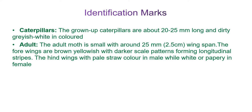The four wings are brown or yellowish in color with a darker scale pattern forming longitudinal stripes. The hind wings show a pale straw color in the male, whereas in the female the hind wings are either white or papery in color. This allows easy differentiation between the male and female moth.